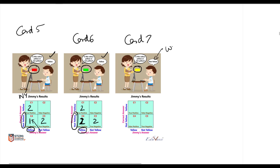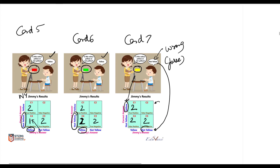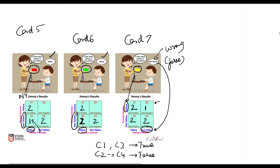For card 7, the teacher shows Jimmy a yellow card but Jimmy answers not yellow — this answer is wrong. The teacher showed yellow and Jimmy answered not yellow, so they intersect in false cell C2, and we fill that cell. C1 and C3 are the true cells, while C2 and C4 are the false cells, and we keep filling in the values accordingly.